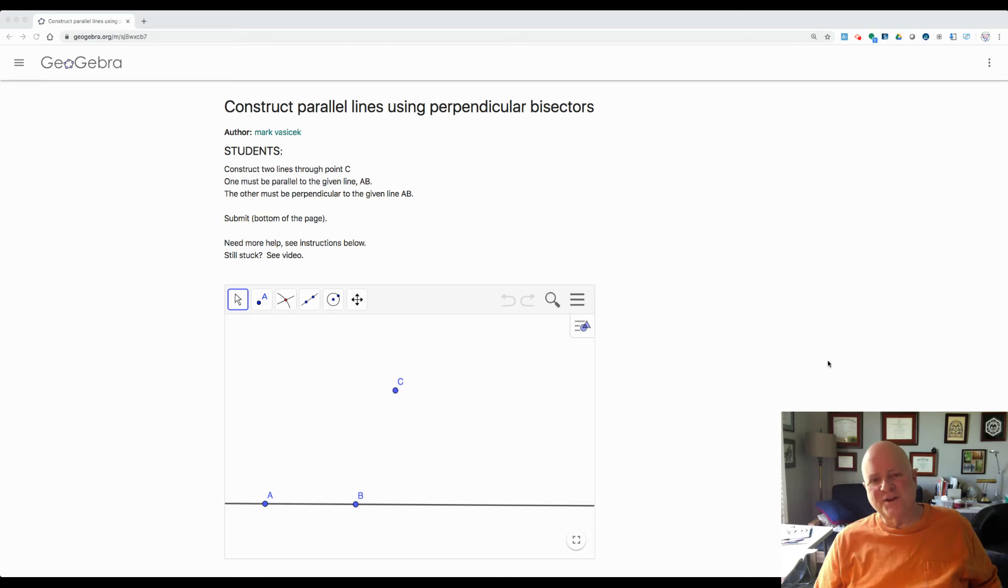Hi! Today we're constructing a line that is parallel to a given line through a point that is not on that line.